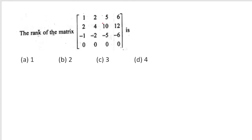What is the rank of the given matrix? The first row is [1,2,5,6], second row is [2,4,10,12], third row is [−1,−2,−5,...] and there is a zero row. Row 2 = 2·Row 1 and Row 3 = −1·Row 1. Only one linearly independent row exists. The rank of this matrix is 1.